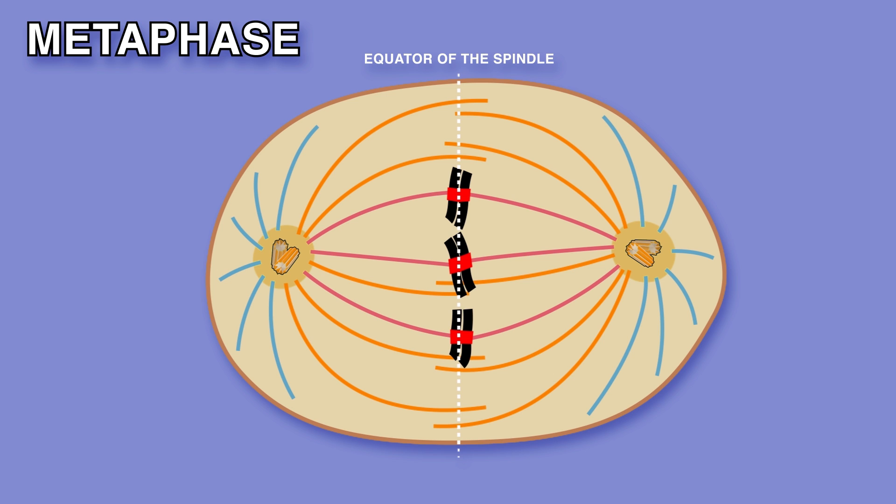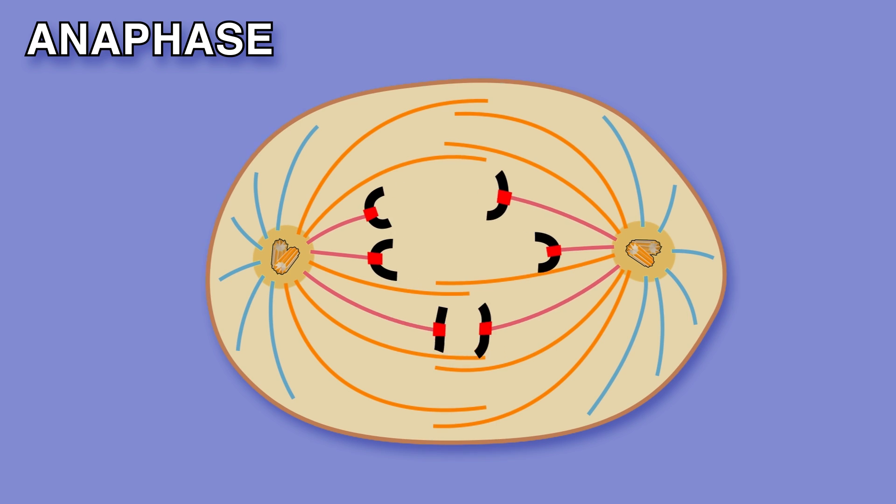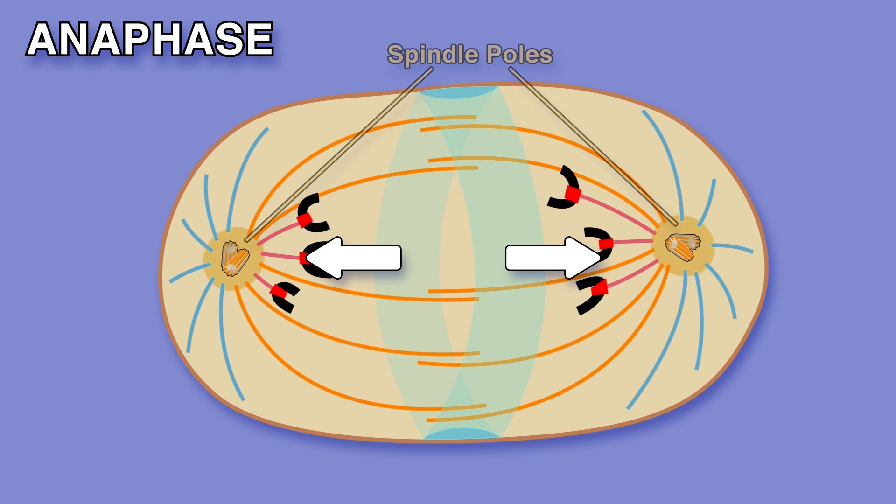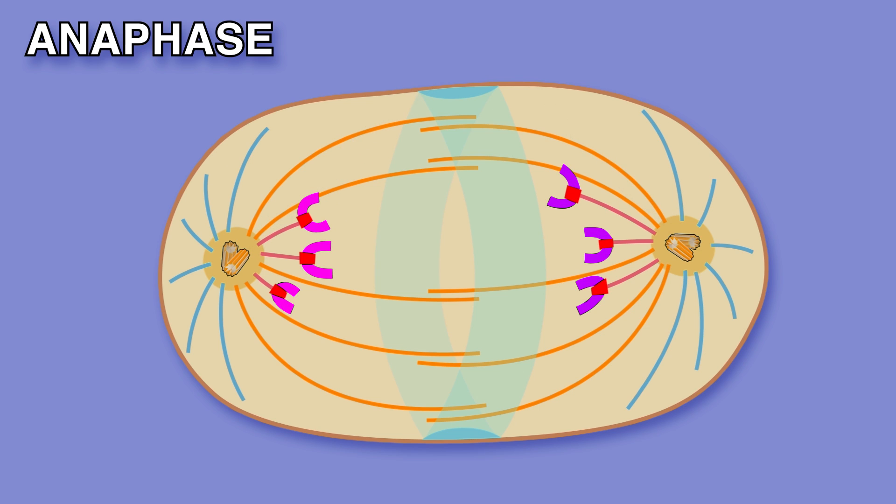These microtubules to opposite poles of the spindle attach. During anaphase kinetochore microtubules are shortened, spindle poles move apart, daughter chromatids are transported. This synchronized separation of sister chromatids makes two sets of daughter chromosomes, one at each end.